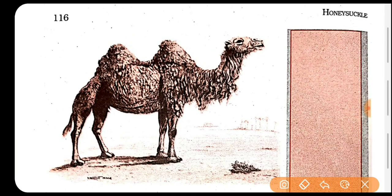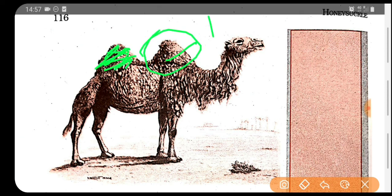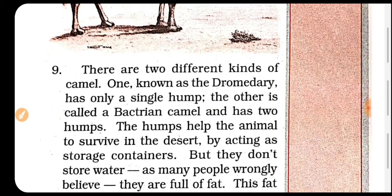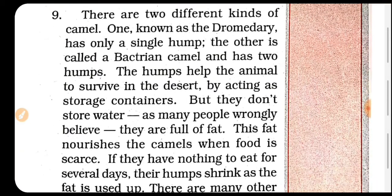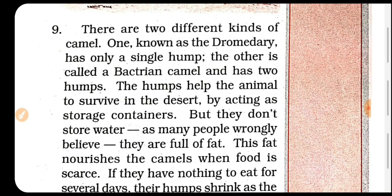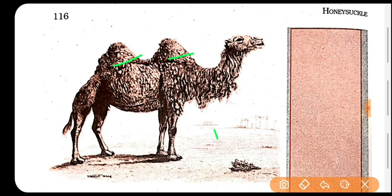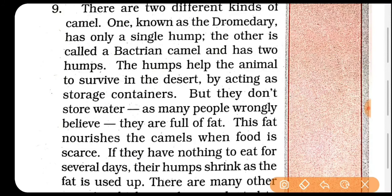Aap is ki pic dekh rahe hain — is ke jo hain woh double hump hain. There are two different kinds of camel. Ek jo hote hain woh hote hain dromedary — dromedary hote hain woh single hump wale hote hain — unka single hump hota hai bas. Aur jo second one hai us ko Bactrian camel kehte hain — aur uske two humps hote hain. It means hamara yeh jo camel hai — Bactrian hai, is ke two humps hain. Aur jo single hump hai us ko dromedary kehte hain.